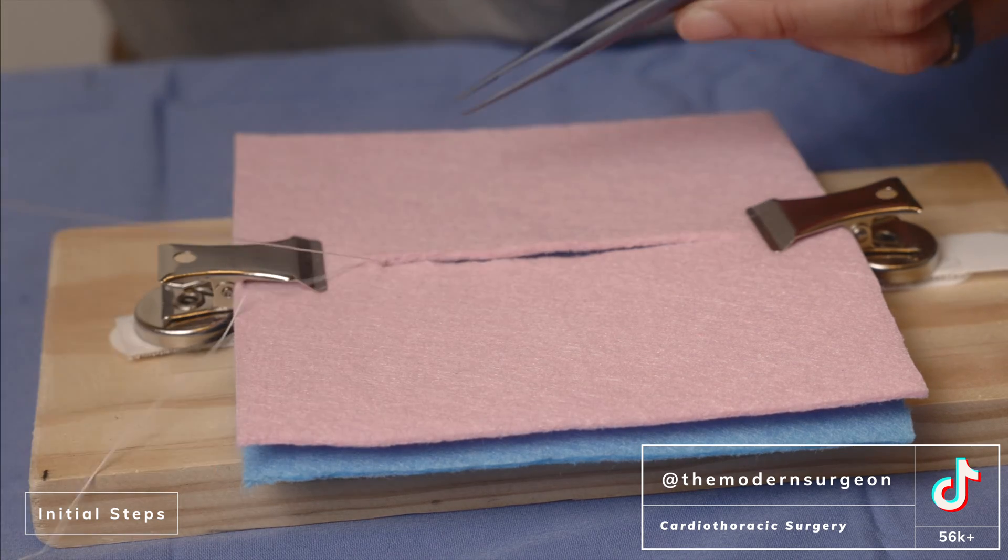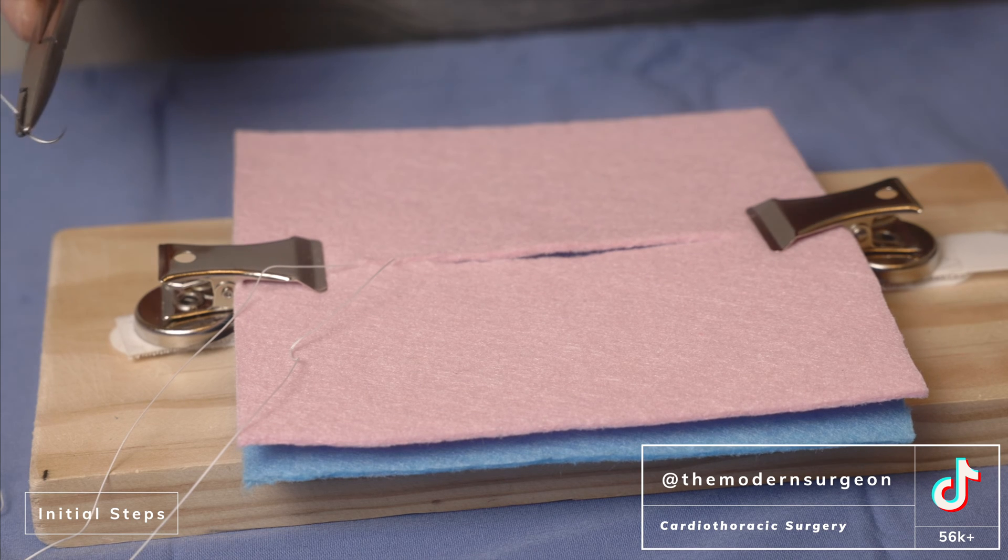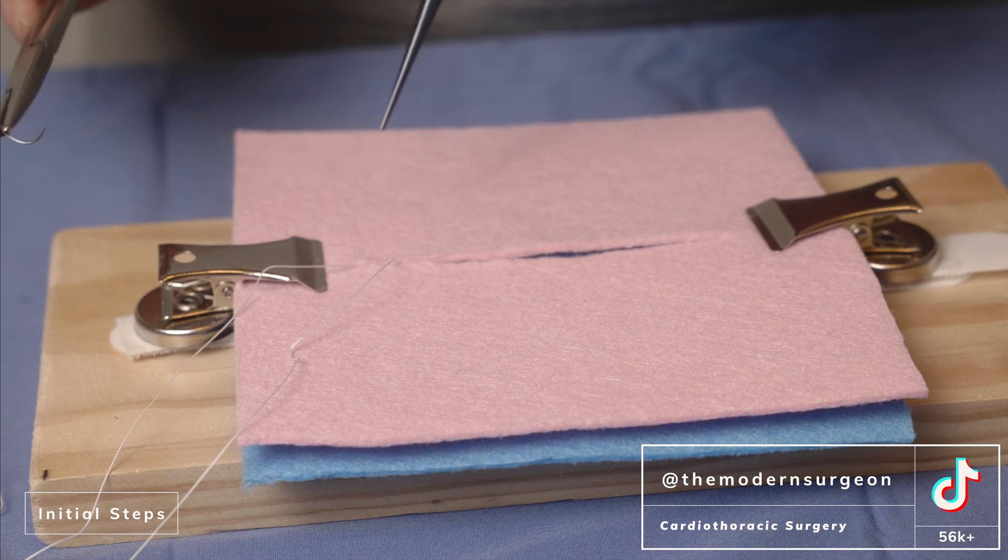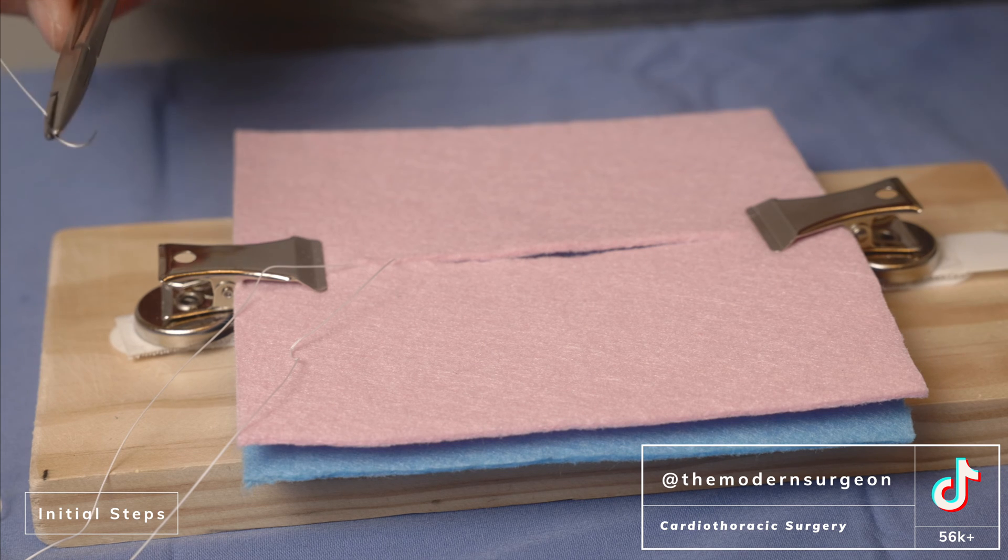But for subcuticular closures, you're going into the layer of the skin so that if you were to look at it from the outside, the suture does not show. You stayed at the same level, same depth throughout the trajectory of that needle.